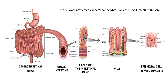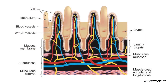This picture is taken from Shutterstock, duly acknowledged. It shows a very detailed diagram of the supply of blood vessels and lymph vessels in each villus, and also shows the crypts and crypt depth that play a key role in nutrient absorption.